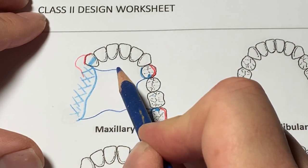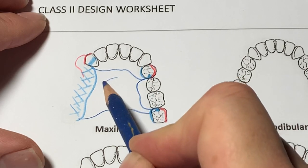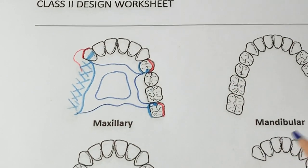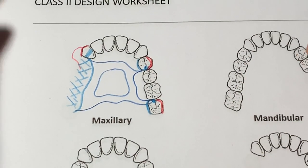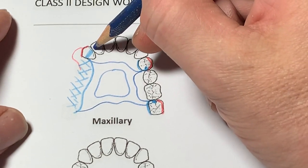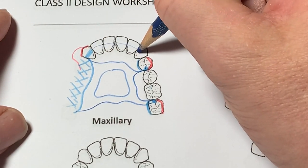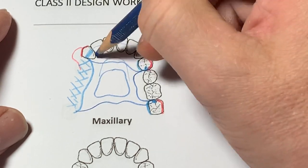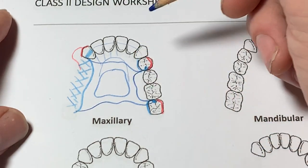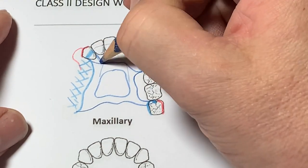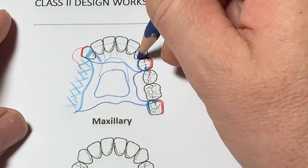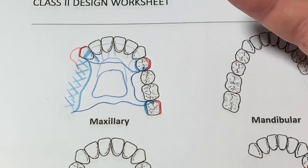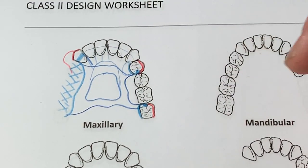For free ends of Class 1 and 2, it's prudent to extend the major connector as far posterior as possible. We could exercise an anterior palatal strap — a large one — or an anterior-posterior palatal strap; either would work, and obviously less metal is better. If you wanted more indirect retention, you could Kennedy bar the whole anterior, plate up here, or just apron the canine with a minor connector.